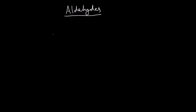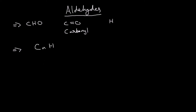Now I'm going to talk about aldehydes. The functional group of aldehydes is that it always contains a carbonyl group and a hydrogen atom at the end of the chain — written as CHO, where CHO means C double-bonded to O. That CHO group — a carbonyl and a hydrogen — is the functional group. Their general formula is CnH2n+1CHO.